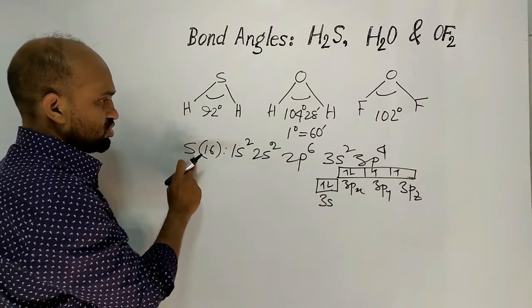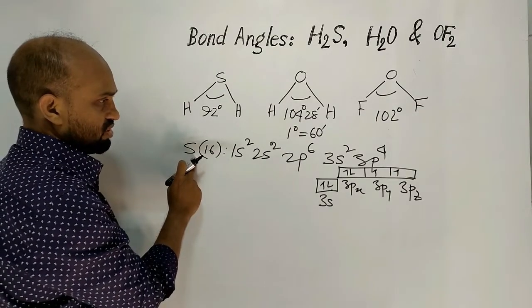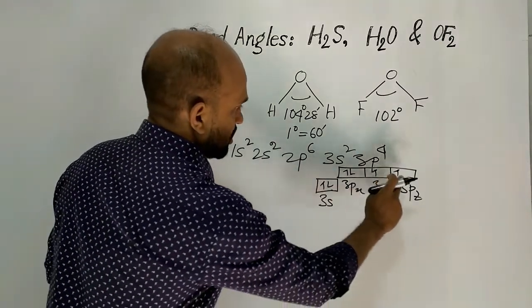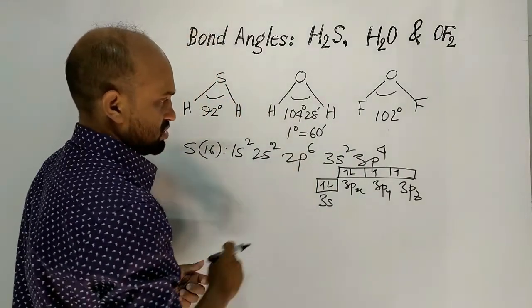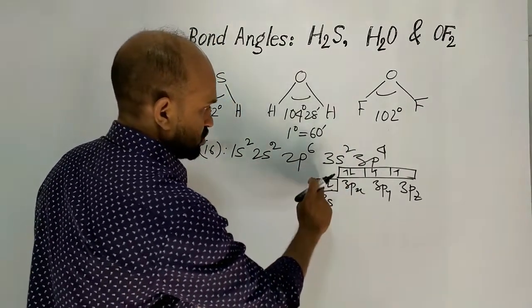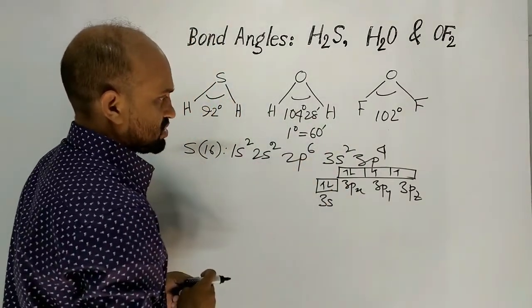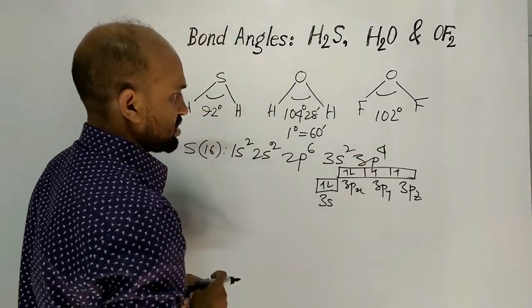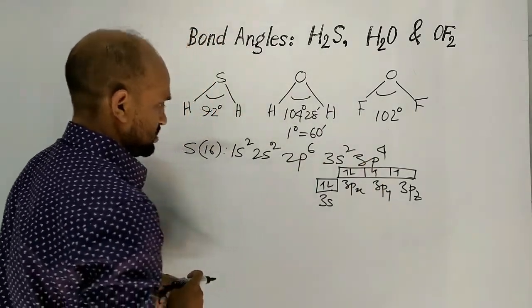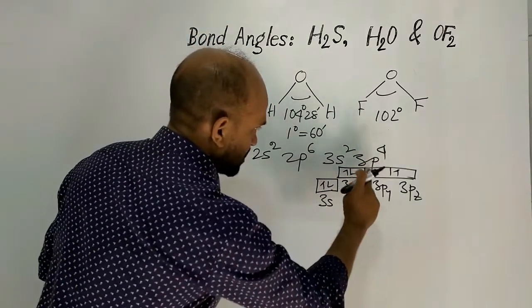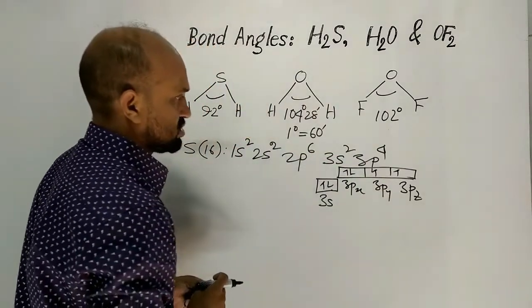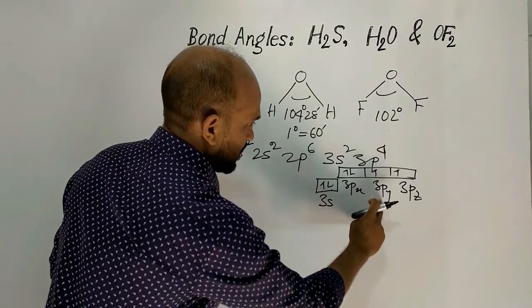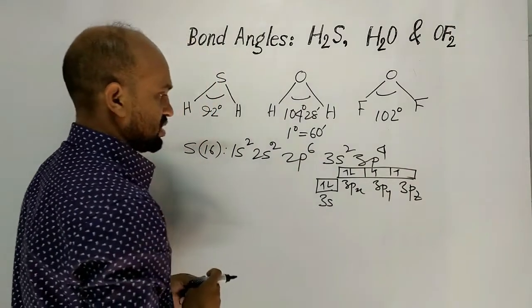In the outermost shell of sulfur, there are a total of six electrons: two electron pairs and two unpaired electrons. These two unpaired electrons remain in the 3py and 3pz orbitals.